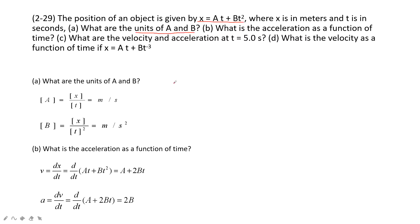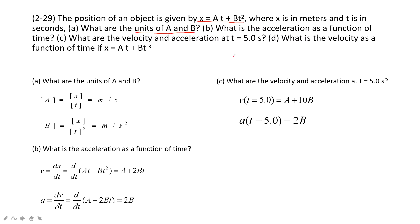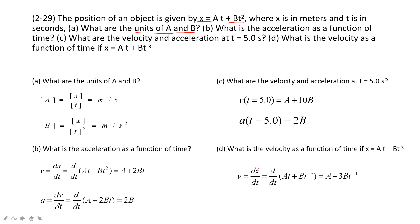The third part asks you to calculate the velocity and acceleration at t equals 5 seconds. We just input t equals 5 seconds into the velocity and acceleration functions v and a. Then we find the answer. If x equals at plus bt to the negative 3, we take the derivative to find the velocity as a function of t, and then find the answer.